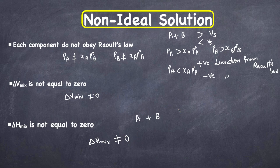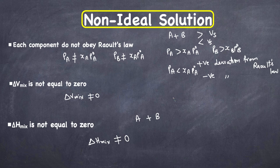For example, when we mix sulfuric acid as a solute into water, a large amount of heat is generated. There will also be a change in volume. Such a solution is a non-ideal solution.